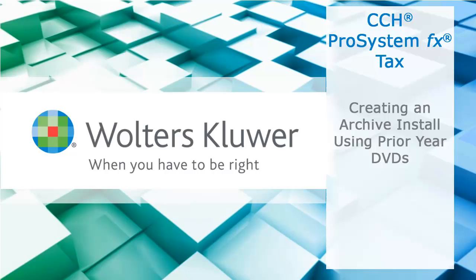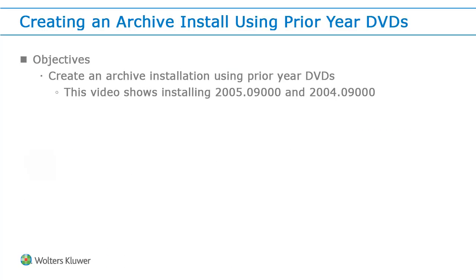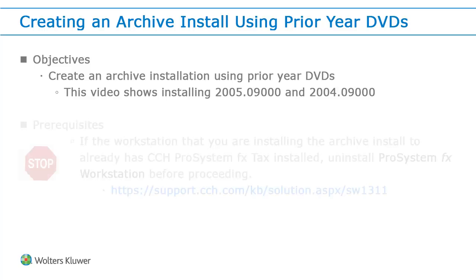Hello, welcome to the video to learn how to create an archive installation of CCH Pro System FX Tax using prior year DVDs. This video shows you how to install 2005 CCH Pro System FX Tax to use as the foundation for your archive installation. After installing 2005 tax preparation, you can install any of the years prior to 2005 that you wish. In this video, we install 2005 tax preparation and then we add 2004.